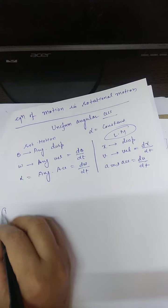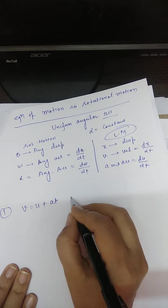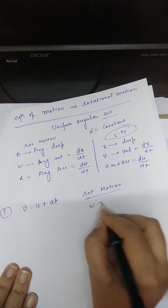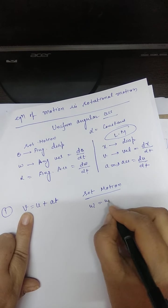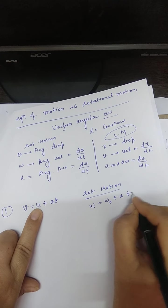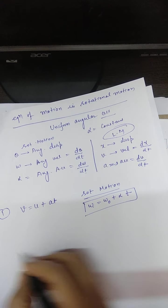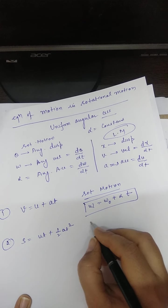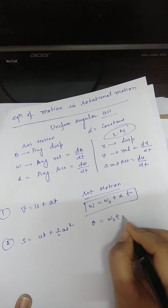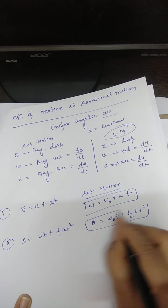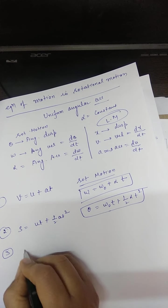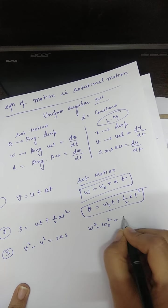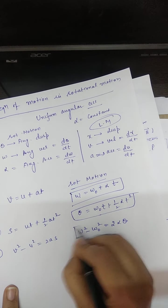The three equations of motion for rotational motion are: (1) ω = ω₀ + αt, (2) θ = ω₀t + ½αt², and (3) ω² − ω₀² = 2αθ. These are analogous to v = u + at, s = ut + ½at², and v² − u² = 2as. No proof is needed for these.